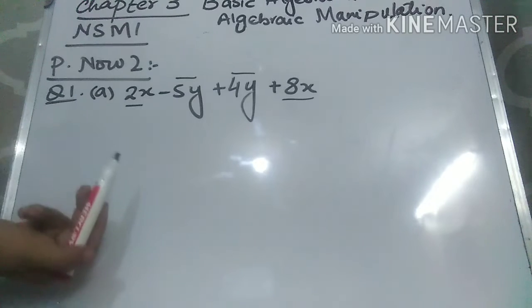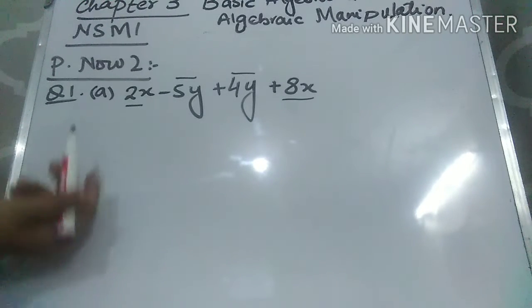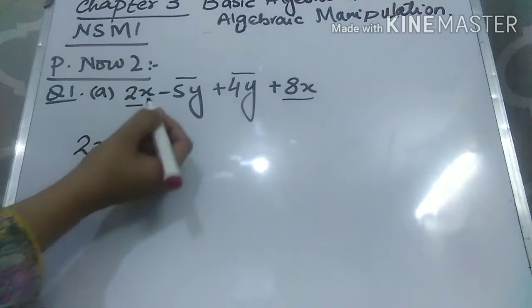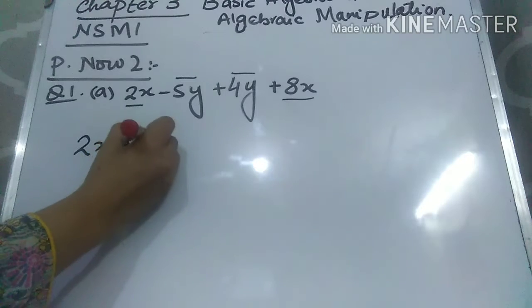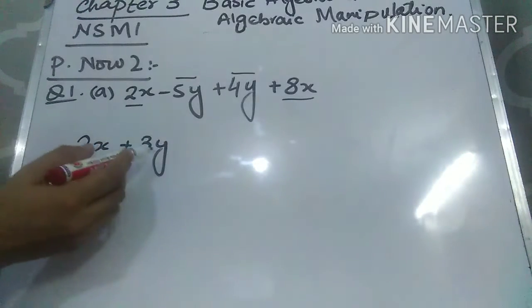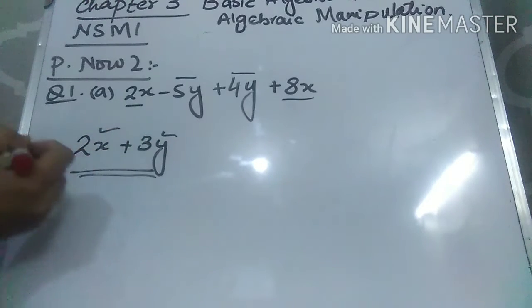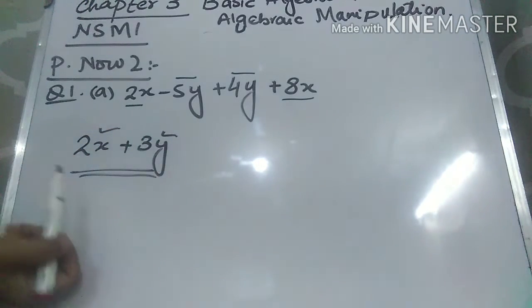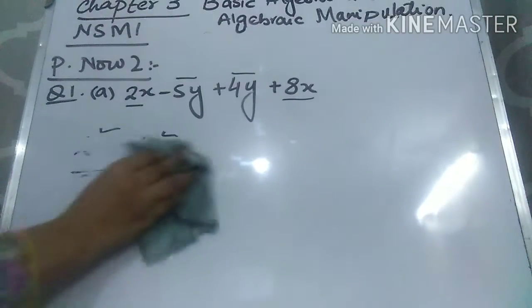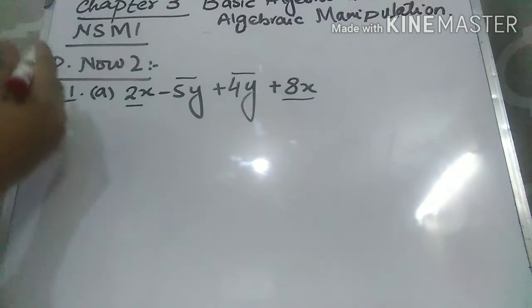You can only solve like terms together. You cannot solve unlike terms together. Unlike terms are terms where the variables are different — for example, if you have an X variable with one coefficient and a Y variable with another coefficient. Here you can see that X and Y are different variables, so these are not like terms; these are unlike terms. You have to solve the like terms together.